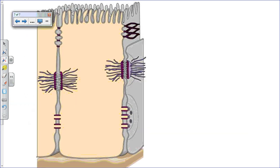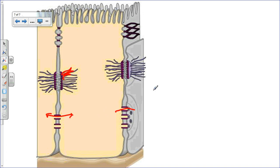Cell surface junctions come in four main types. Tight junctions seal cells together and prevent substances from passing through. Desmosomes act like fingers reaching into adjacent cells to anchor them together. Gap junctions in animal cells are cytoplasmic continuations that allow substances to pass from one cell to the next. In plant cells, the equivalent structures are called plasmodesmata.